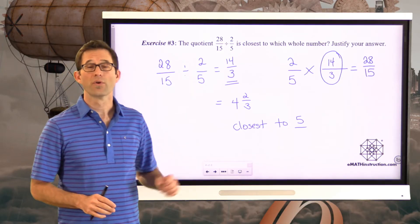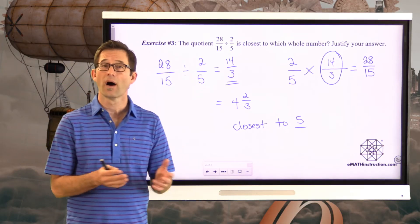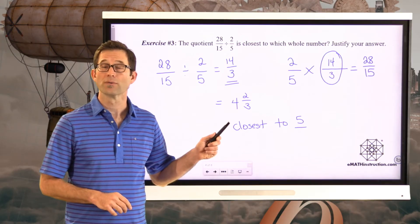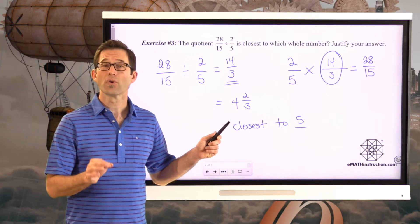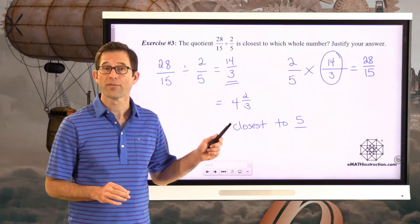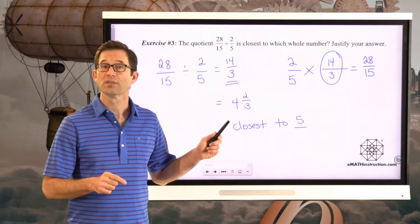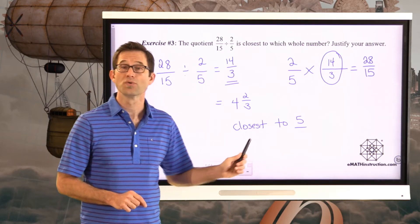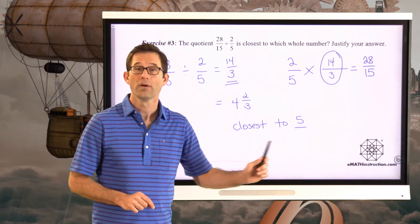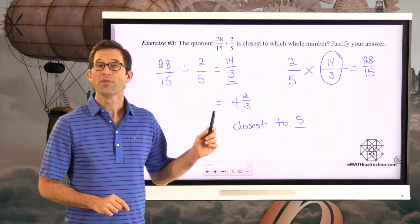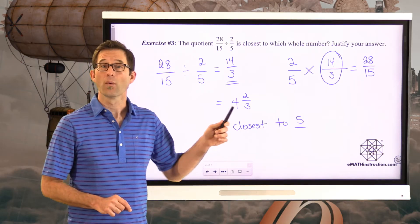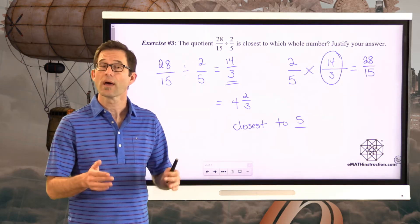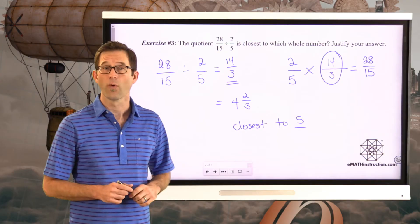How do I know 4 and 2 thirds is closest to 5 and not 4? It's all about that fraction 2 thirds. Two thirds is larger than 1 half, and because it's larger than 1 half, 4 and 2 thirds is closer to 5. If this had been 4 and 1 third, then since 1 third is less than 1 half, that would have been closer to 4.